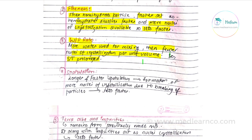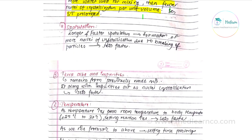Fourth factor is spatulation. Longer or faster spatulation results in the formation of more nuclei of crystallization, because of the breaking of the particles. As more particles break, more nuclei of crystallization form, so the material sets faster.